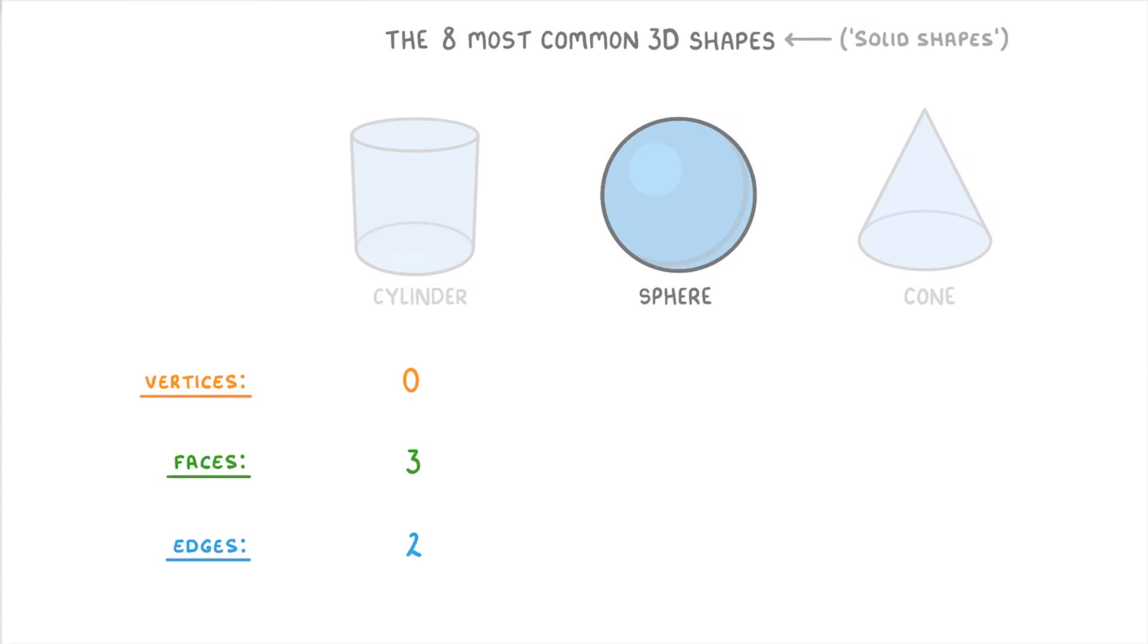Then moving on to the sphere, this has just 1 single curved face, that stretches around the entire shape. So it doesn't have any vertices or any edges.